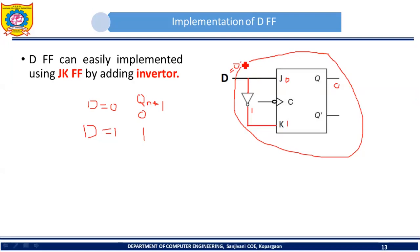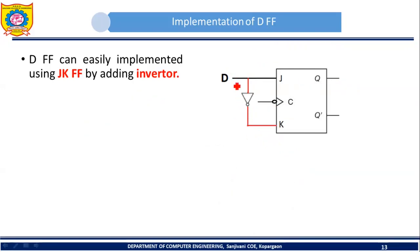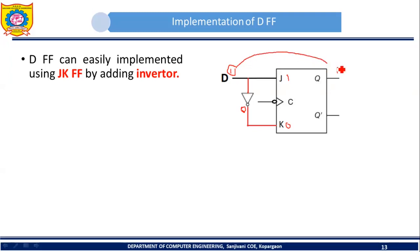Now consider the other possibility. If D is 1, then J will be 1, and due to this the output of the NOT gate will be 0, so K will be 0. In the JK flip-flop, if J is 1 and K is 0, since J stands for set, the next state will be 1. So we applied input 1 and we get output 1 — this confirms that it is a D flip-flop. In this way we can implement a D flip-flop using a combination of a JK flip-flop and an inverter.